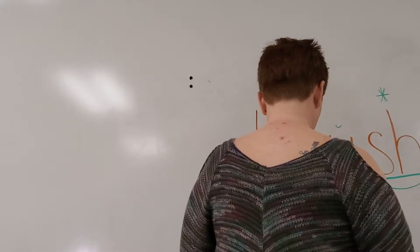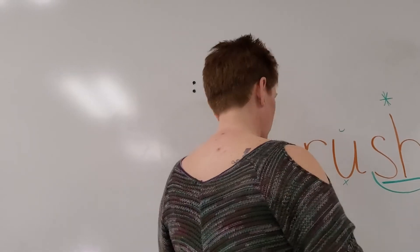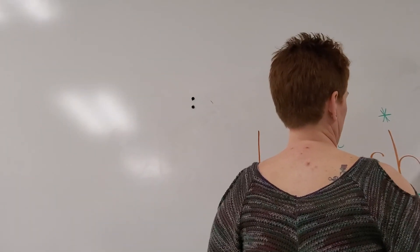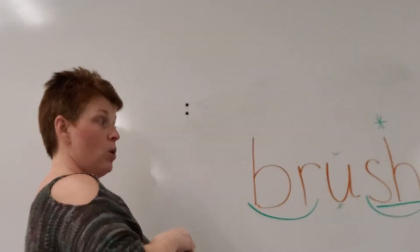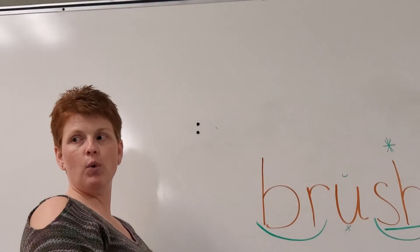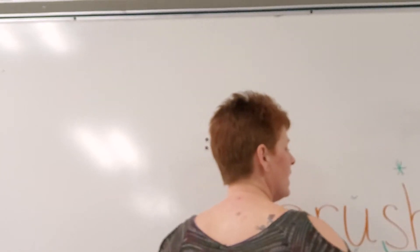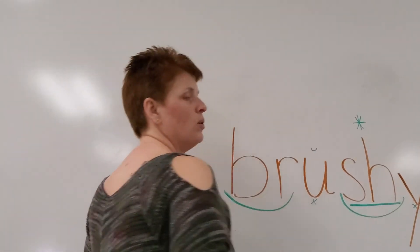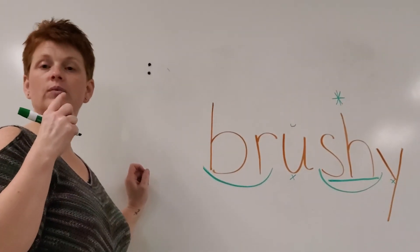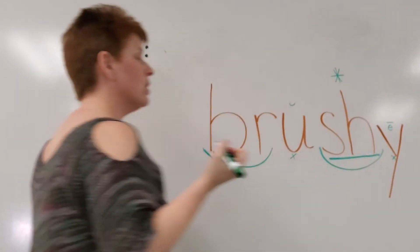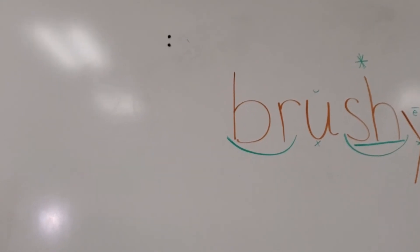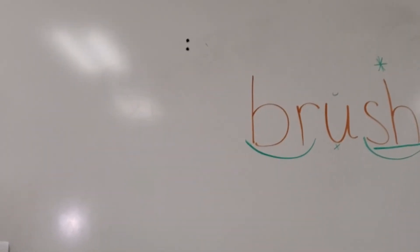Now, what's this word? When I add a Y to the end of a word, and it already has a vowel, what sound does that Y make? E. The long E sound. What is this word? Brush-E. Brushy.